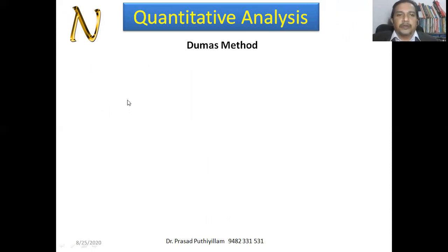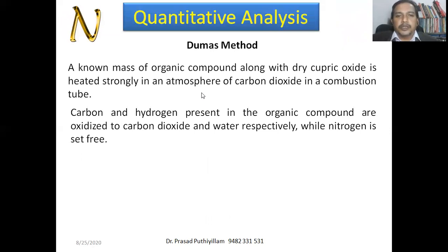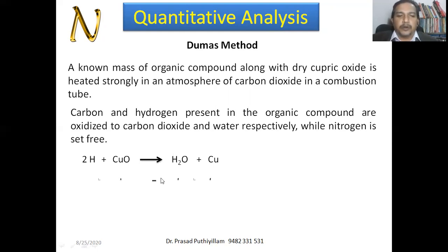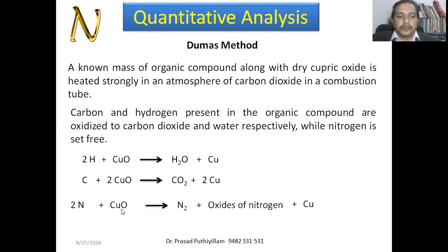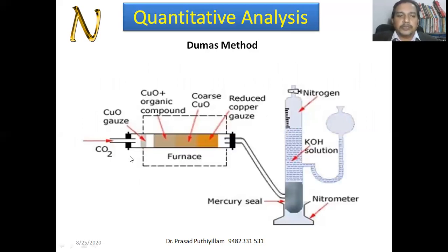Now we move on to nitrogen. Nitrogen can be estimated mainly by two methods. The first is the Dumas method, in which a known amount of organic compound is heated or mixed with dry cupric oxide and heated strongly in an atmosphere of carbon dioxide in a combustion tube, so that carbon and hydrogen are oxidized to CO₂ and water respectively, whereas nitrogen is set free as nitrogen gas. Carbon combines with CuO to give CO₂ and copper; nitrogen combines with CuO to give nitrogen gas.